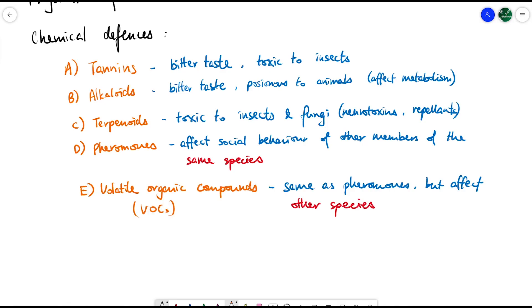The fifth type is volatile organic compounds (VOCs), which do the same thing as pheromones but affect other species instead. When being attacked by a particular pest, some plants can release VOCs to attract predators of that insect. They're attracting the enemy of the enemy to attack the insect that's damaging the plant. These are the five chemical defenses plants have to respond to herbivory.